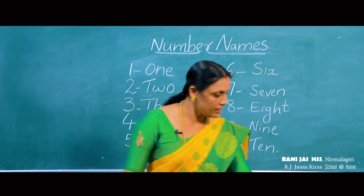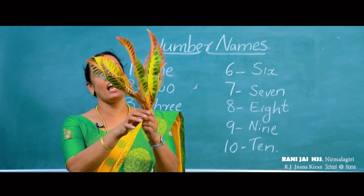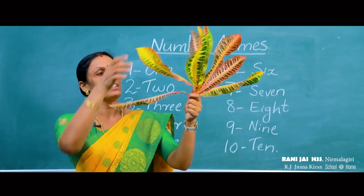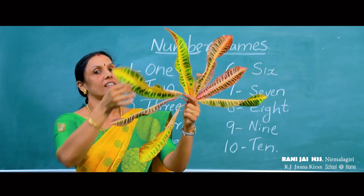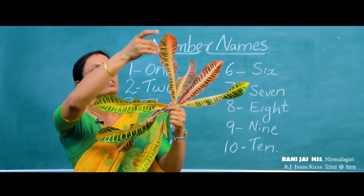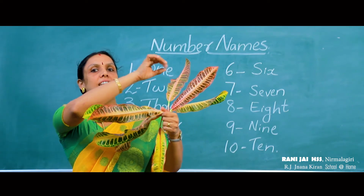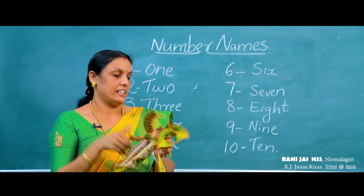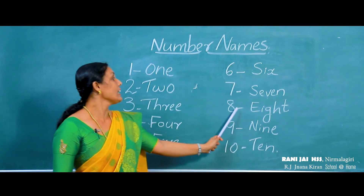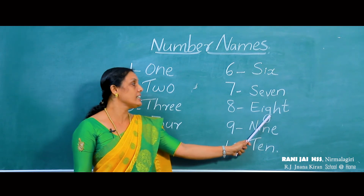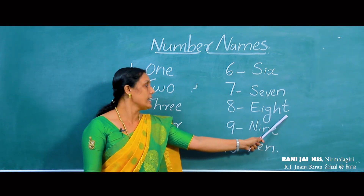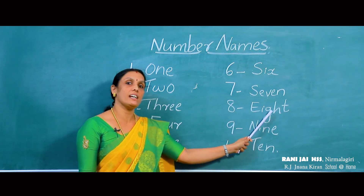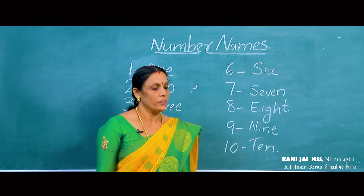Okay, next, how many leaves now? Shall we count it? 1, 2, 3, 4, 5, 6, 7, 8. The number name of 8 is E-I-G-H-T. Spell the number 8 as E-I-G-H-T.